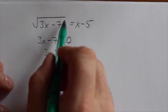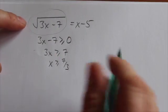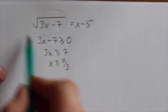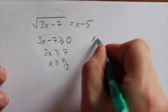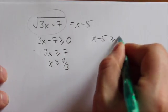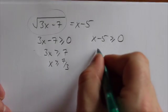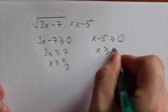a square root symbol can only produce a positive value. So this side of the equation is positive, and because it's equal to this, that means this side must also be positive. x minus 5 must be greater than or equal to 0, which tells us that x has to be greater than or equal to 5.